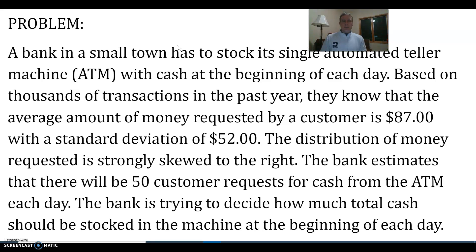Let's make a problem — the solution will be in the next video. A bank in a small town has to stock a single automated teller machine with cash at the beginning of each day. Based on thousands of transactions in the past year, they know the average amount of money requested by customers is eighty-seven dollars with a standard deviation of fifty-two dollars. The distribution of money requested is strongly skewed to the right. The bank estimates there will be fifty customer requests for cash from the ATM each day — 50 is the sample size.